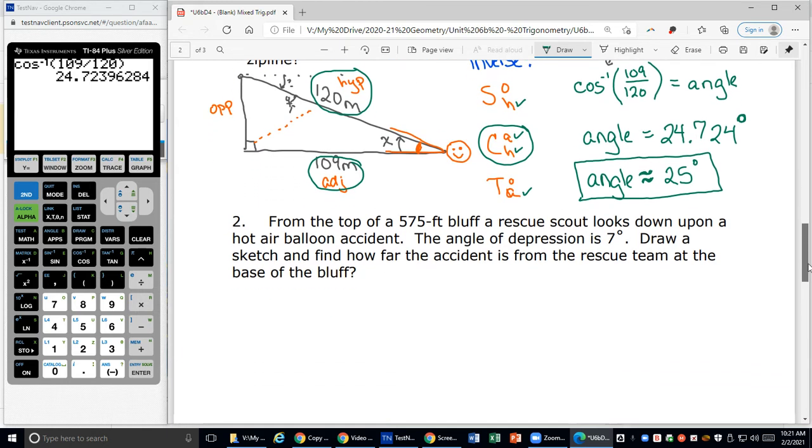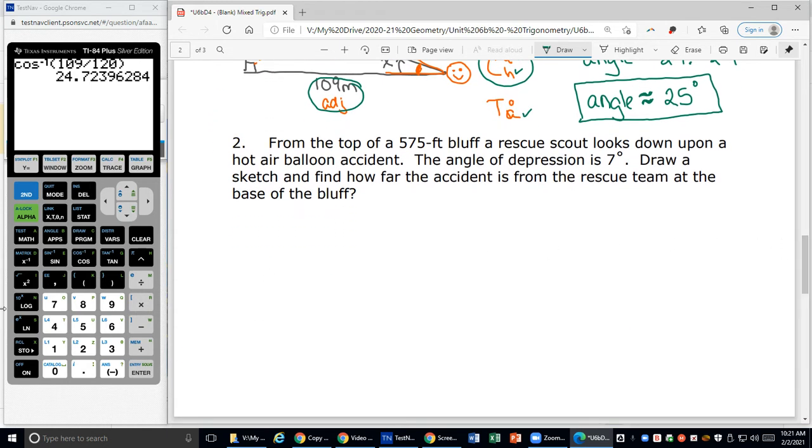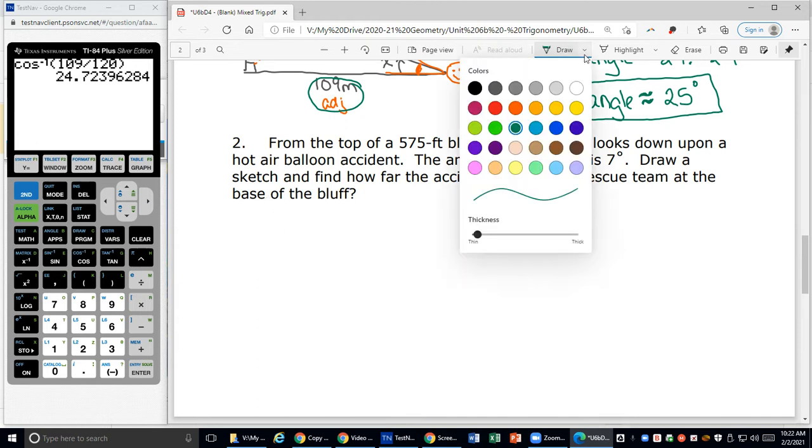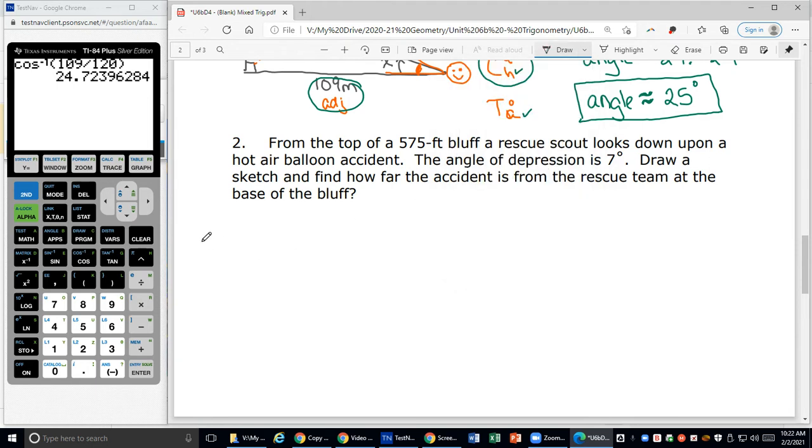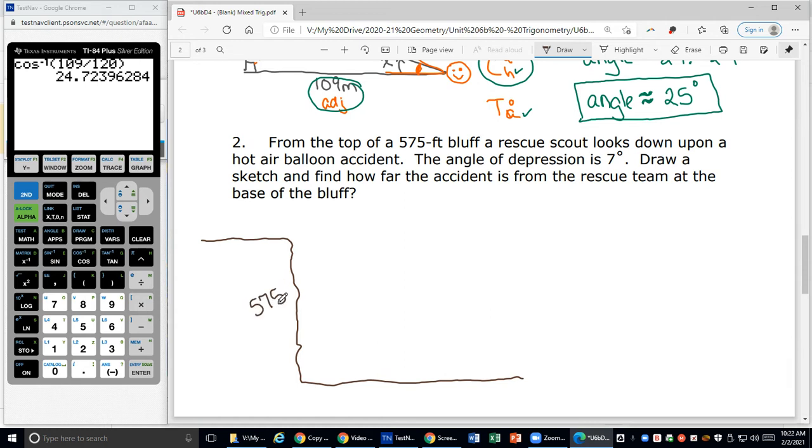Let's look at the next one. Number two, from the top of a 575 foot bluff, the angle of depression is seven degrees. Draw a sketch and find out how far the accident is from the rescue team at the base of the bluff. So bluff is just like a cliff. So it's just going to be like up here. I've got a cliff and then I'm down here and that bluff is 575 feet tall from the top of it to the bottom. And remember height is always measured at 90. So I know that's where my 90 degree angle is going to be.